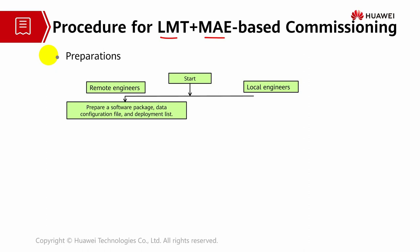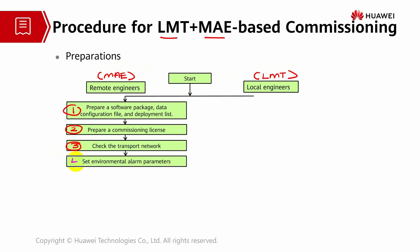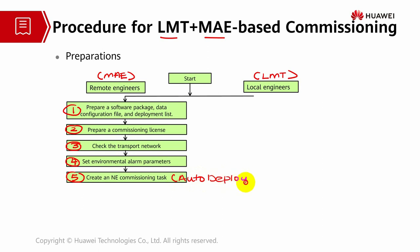Remote engineers will have to prepare a software package, data configuration file, and deployment list. They also need to prepare the commissioning license. Remote engineers will be using the MAE platform, while local engineers will be using the LMT platform. The remote engineer also needs to check the transport network, set environmental-related alarm parameters, and create the commissioning tasks using auto deployment under the SON — all part of the MAE access platform.